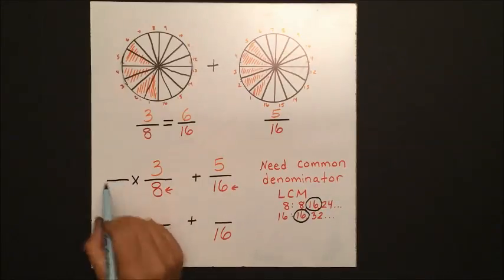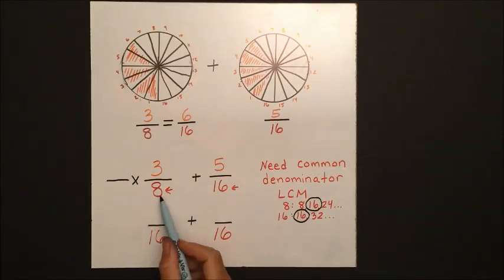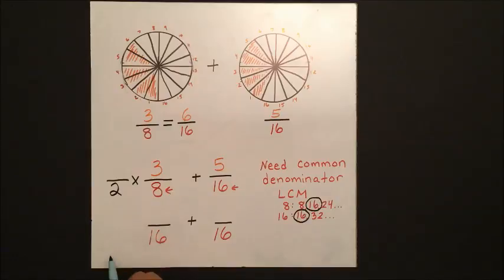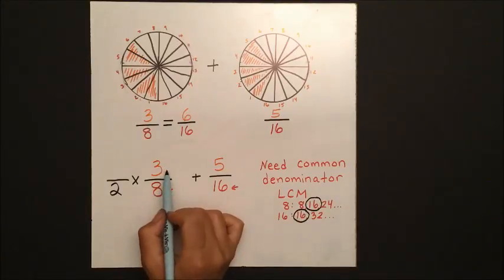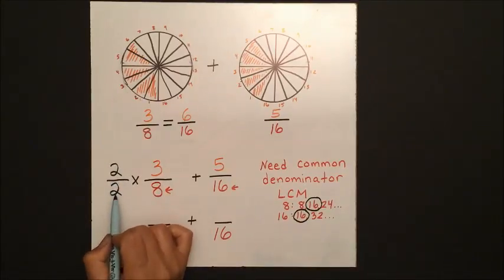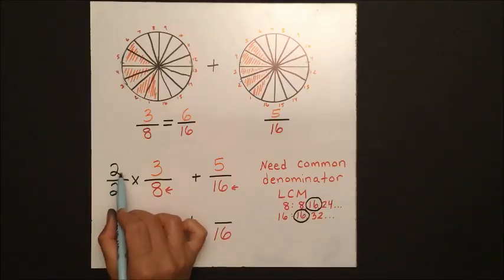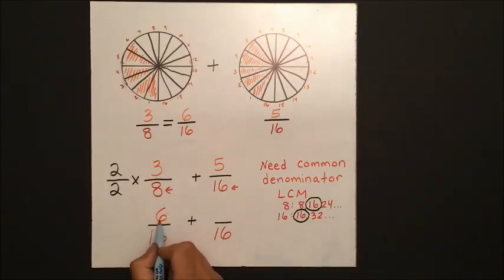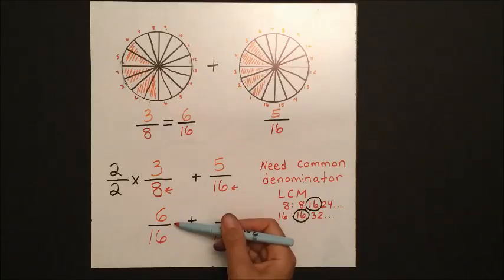So we ask ourselves, how do we get from 8 to 16? Well, we multiply by 2, which means we do the same thing to the numerator. Now this really means 2 over 2. We're just multiplying it by 1, so we're not changing the value, we're just finding an equivalent fraction.